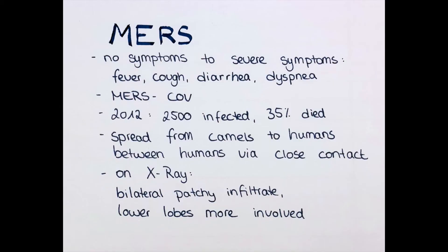Now let's talk about MERS, the Middle East Respiratory Syndrome. It's a viral infection causing atypical pneumonia, caused by the MERS-CoV. There were 2,500 cases of which 35% died in an epidemic in 2012 in Arabia. It was initially spread from camels to humans. The WHO recommended drinking only pasteurized camel milk, avoiding undercooked camel meat, and washing hands after contact with camels, as they may carry the virus in their nasopharynx.